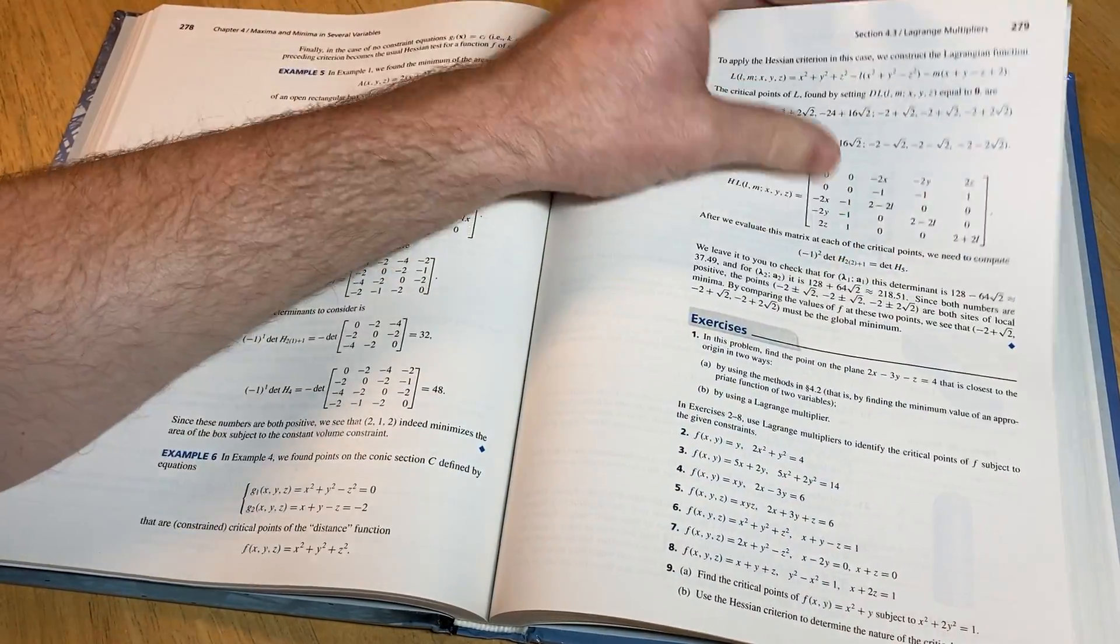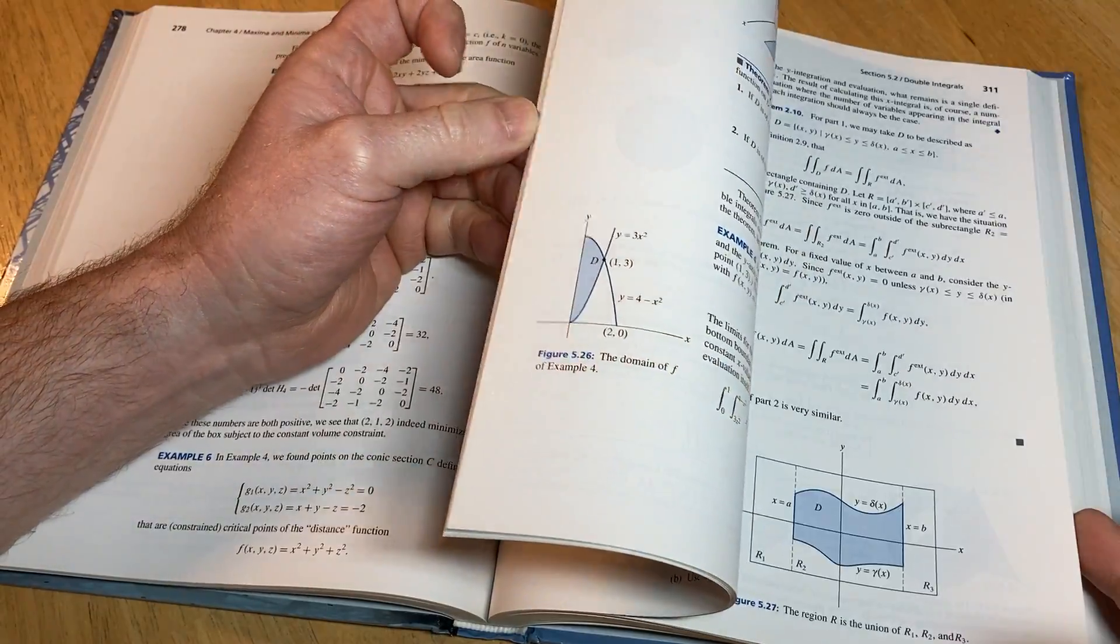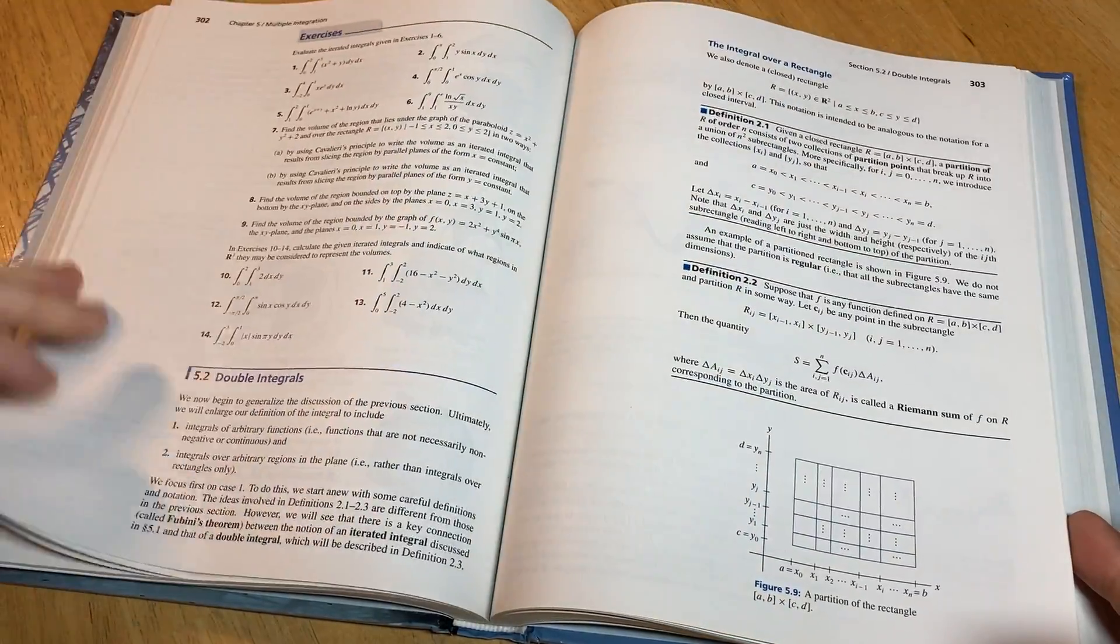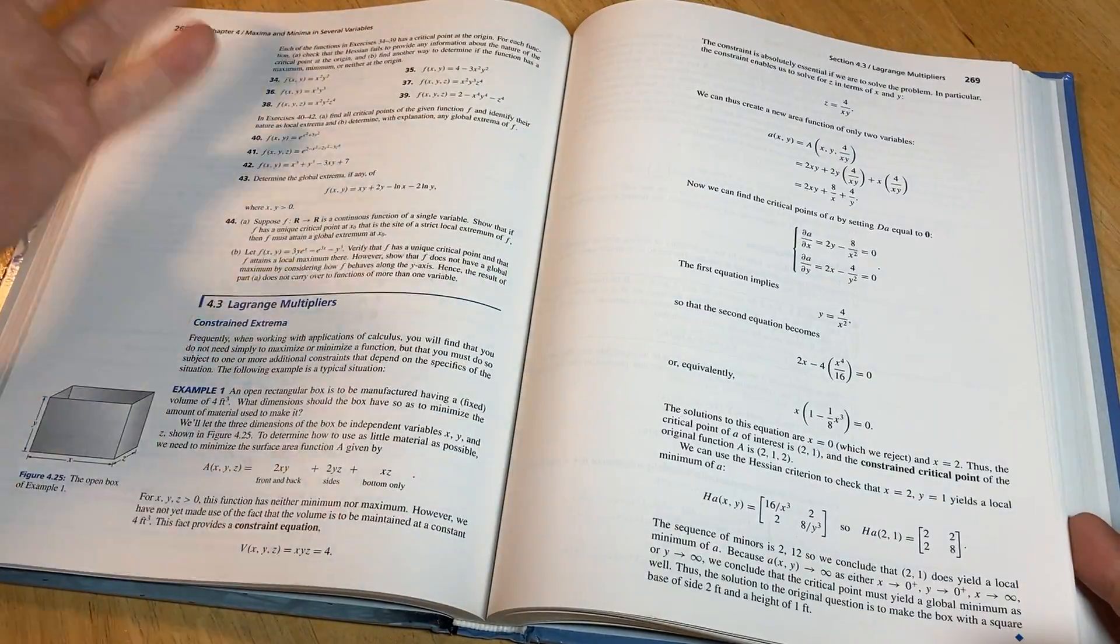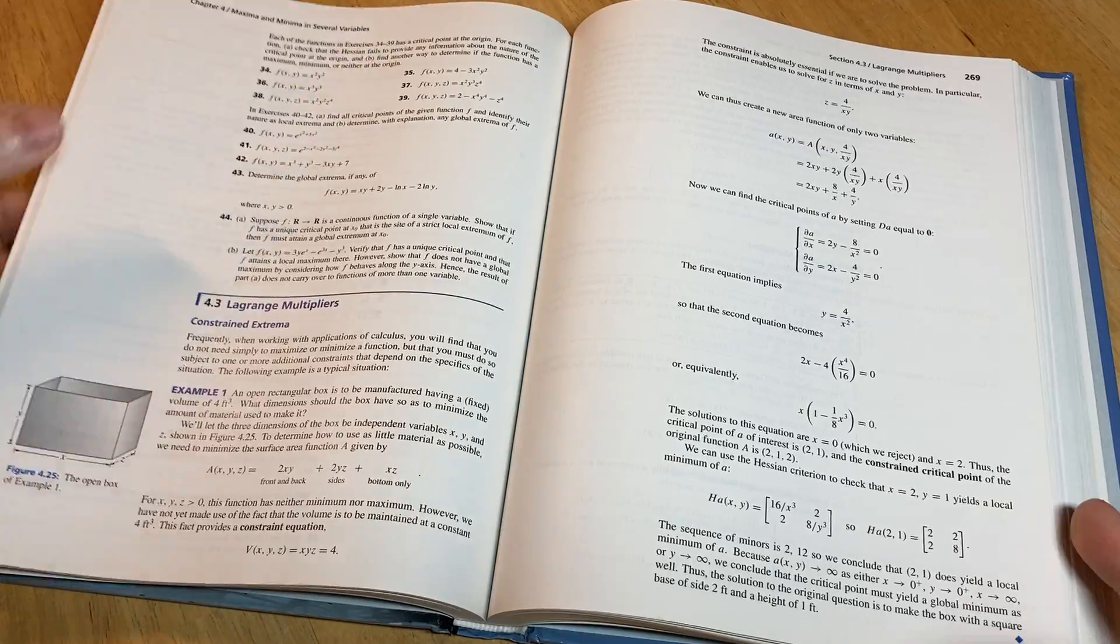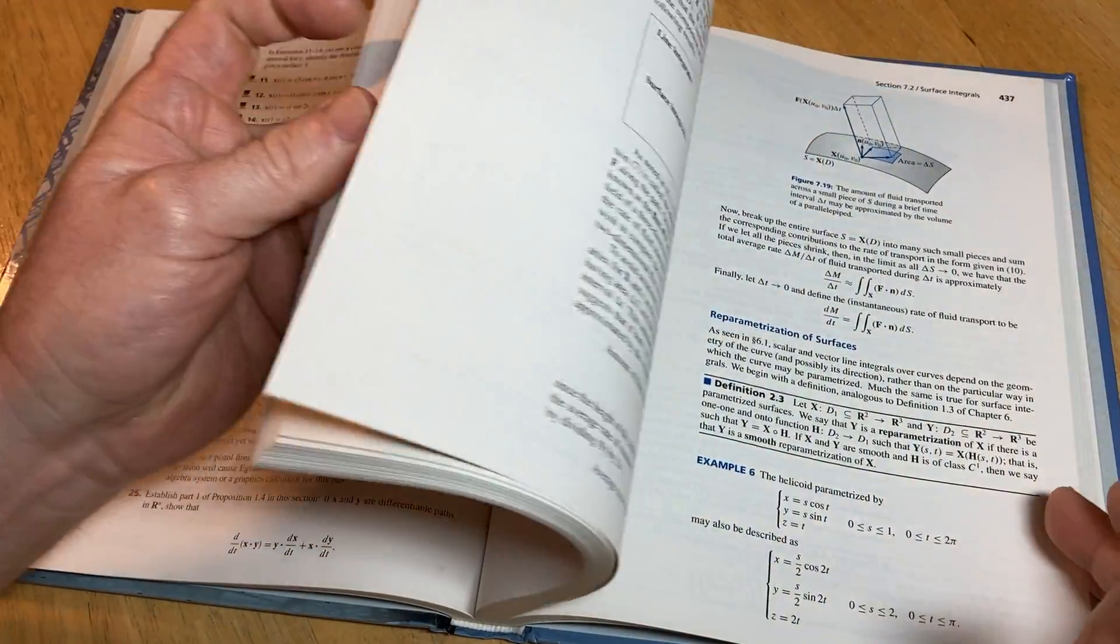So in calculus 3 you study something called multivariable calculus. Basically that's everything you learn in calculus 1 and then you do it in more than one variable. Often times it's called multivariable calculus. Then you go even farther in that course and you study what's called vector calculus.